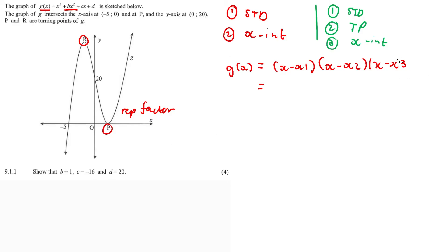That means we take out one of the brackets and square one of the remaining brackets — we repeat it. The repeated factor is going to be P. Our other x-intercept is at negative 5, so plugging that in gives x minus (−5), which is x plus 5. Then we have the repeated factor bracket: (x − x₂) squared.